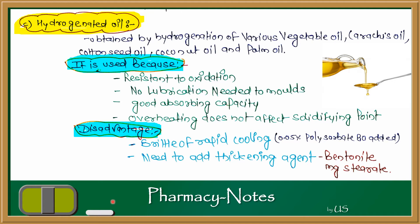Disadvantages of hydrogenated oils: there is a risk of brittle fracture on rapid cooling; to prevent this, 0.05% polysorbate 80 is added. Also, a thickening agent needs to be added because vegetable oil is very diluted, so a thickening agent such as bentonite or magnesium stearate is added to give it shape. It also has a cost effect.